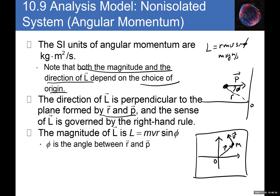The direction of L is perpendicular to the plane formed by r and p. For example, if a particle is moving in the plane of the page and you apply the right-hand rule — fingers in the direction of r, palm facing the direction of velocity, curl fingers toward v — your thumb points out of the page, in the z direction. That gives the direction of the angular momentum. This equation gives the magnitude, and the direction is given by the right-hand rule.